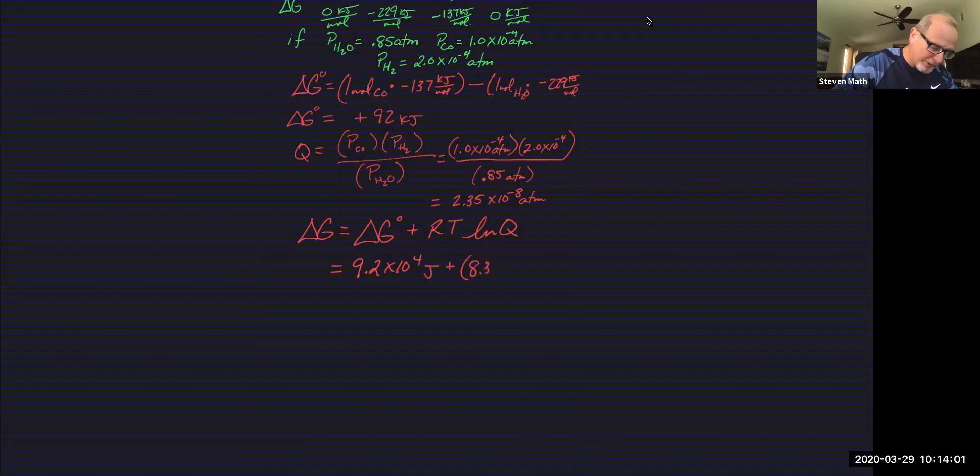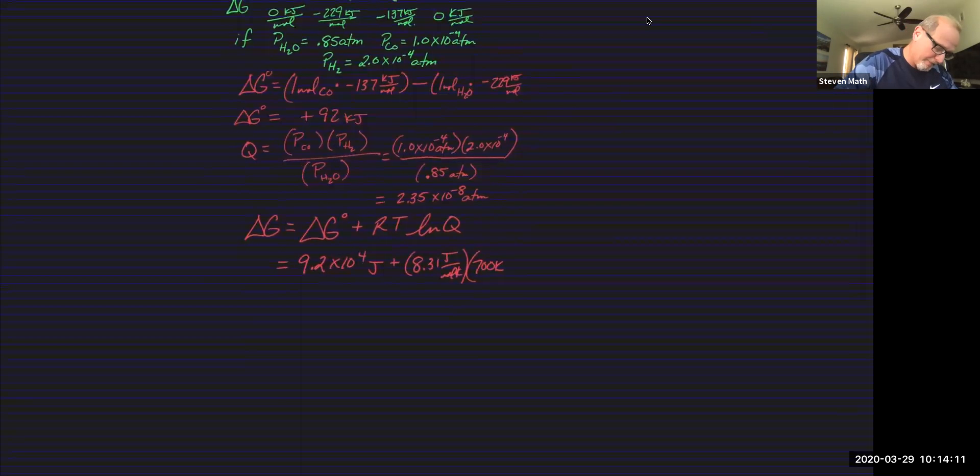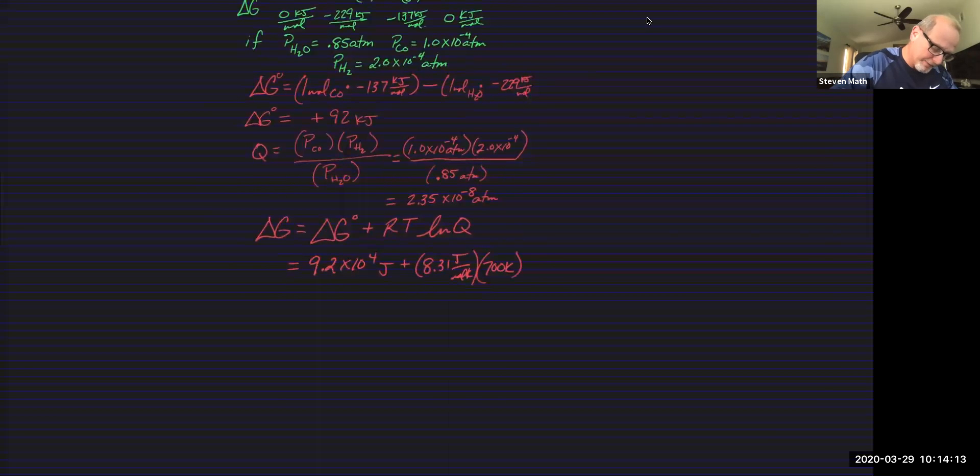So 92 kilojoules is 9.2 times 10 to the fourth joules. Why do we have to do that? Because we're using R of 8.31 joules per mole Kelvin. Kelvin, so 700. And the LN, that's a natural log, kids. LN of what we just calculated of Q, 235 times 10 to the negative eighth.